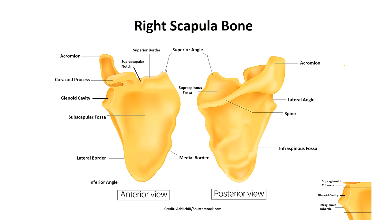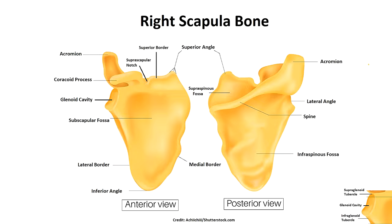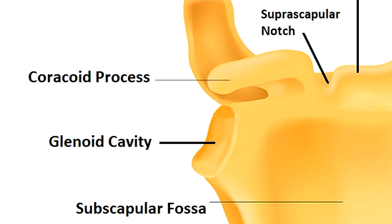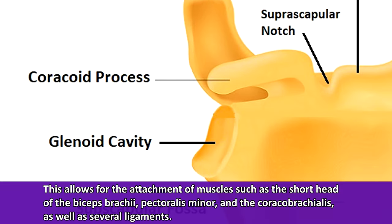Looking at the anterior or front side of the scapula, you'll notice a small hook-like structure that extends out and bends laterally — that is the coracoid process. The word coracoid comes from a Greek word meaning 'a raven-like hooked beak.' This allows for the attachment of muscles such as the short head of the biceps brachii, the pectoralis minor, and the coracobrachialis, as well as several ligaments.